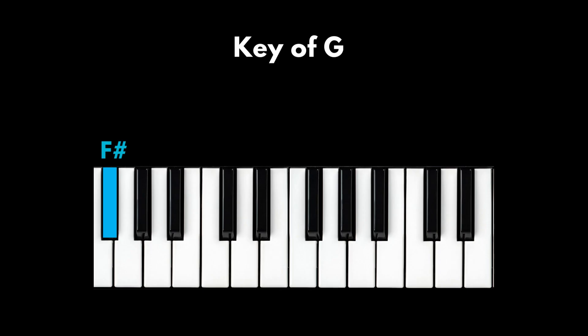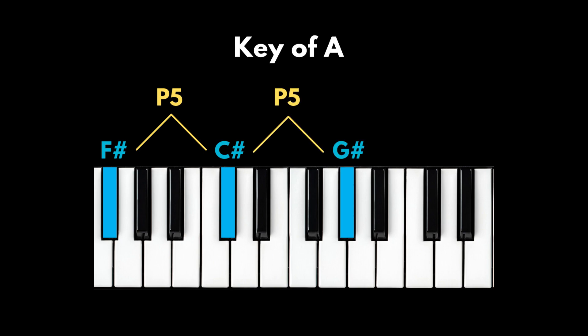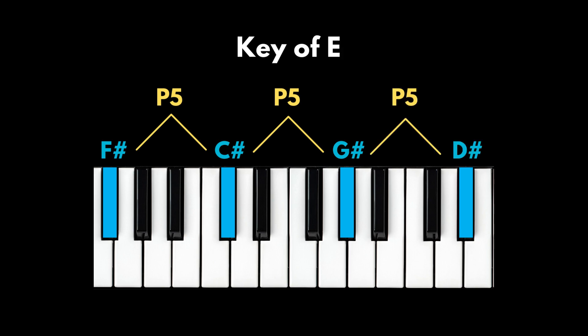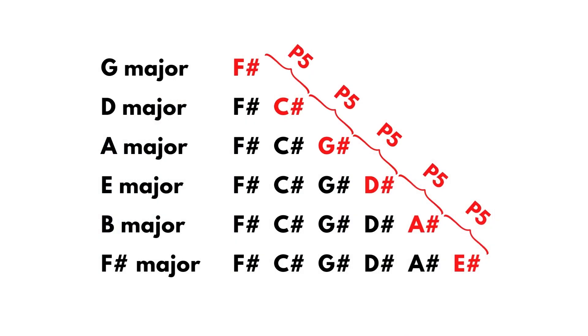Number two: the sharp that you add for each key change also goes up by a perfect fifth. So G major has an F sharp; D major has an F sharp and a C sharp; A major has an F sharp, C sharp, and a G sharp; E major has an F sharp, C sharp, G sharp, and a D sharp. So this is another lens through which you can view adding sharps — as your musical key goes up by a perfect fifth, so do your sharps.